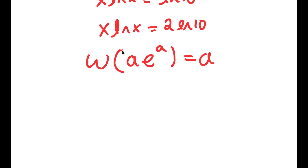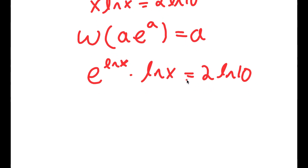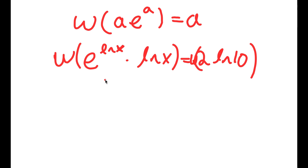So what I'm going to do is rewrite x here as e to the power of ln x, because e and ln cancel out, and this results in simply x. So I'm rewriting x as e to the power of ln x, and I have this times ln x is equal to 2 times ln 10. This is now in the form a times e to the power of a. So if I take the Lambert W function on both sides, this results in ln x equaling W of 2 times ln 10.